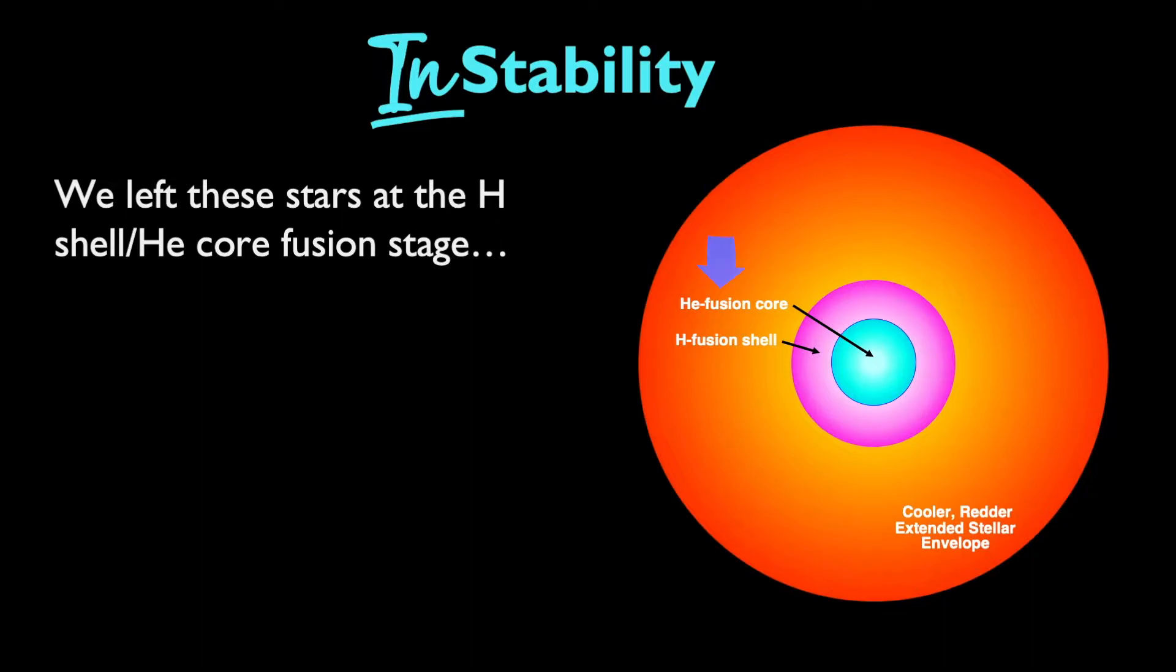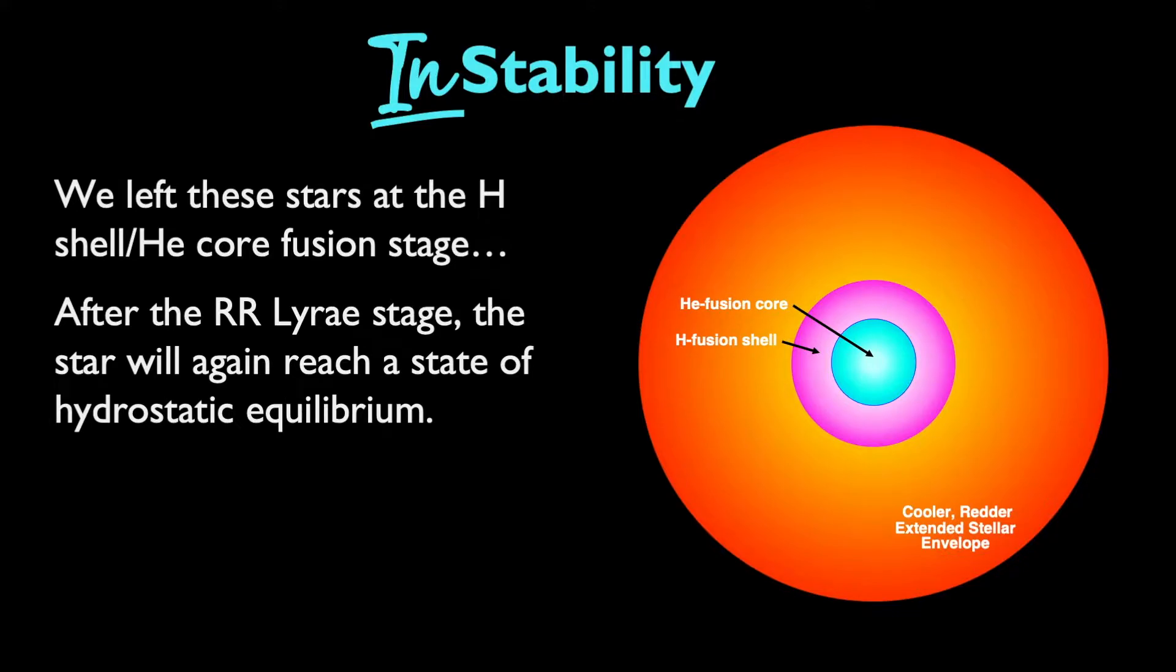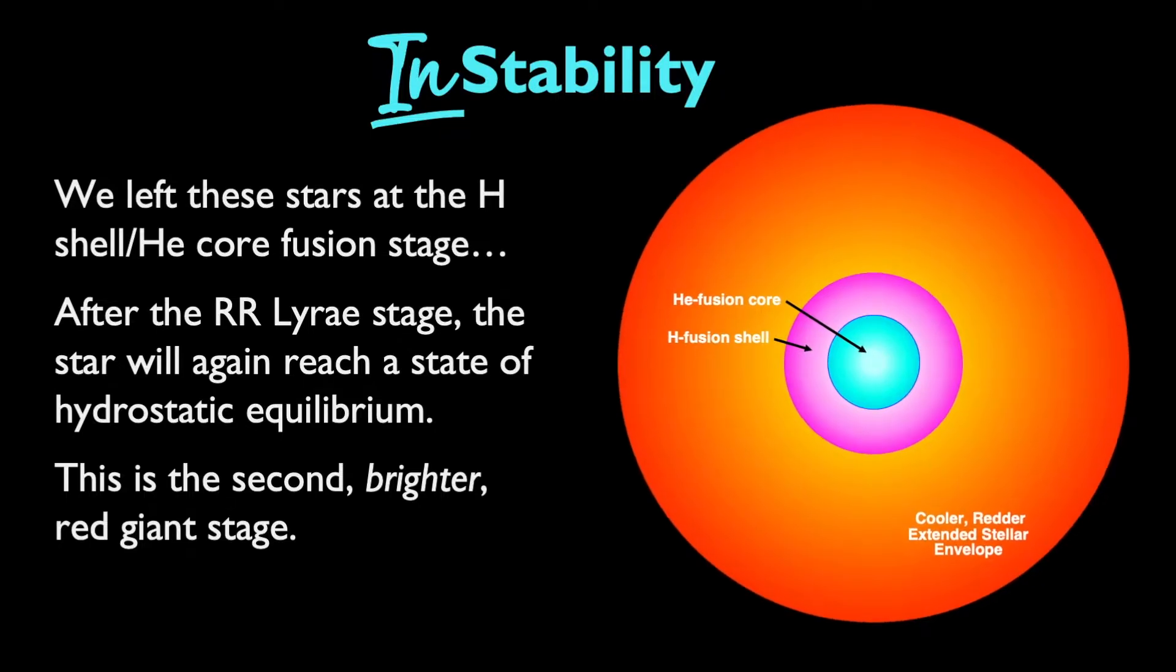We left these stars at the stage of helium-core fusion, surrounded by a shell of hydrogen fusion. After the RR Lyrae stage, the star again finally reaches a new state of hydrostatic equilibrium. Turns out it does find a balance after all. This becomes the star's second and brighter red giant stage.